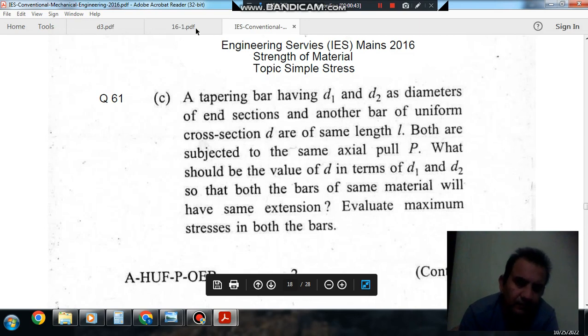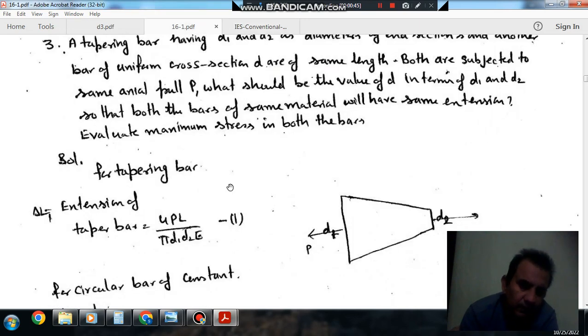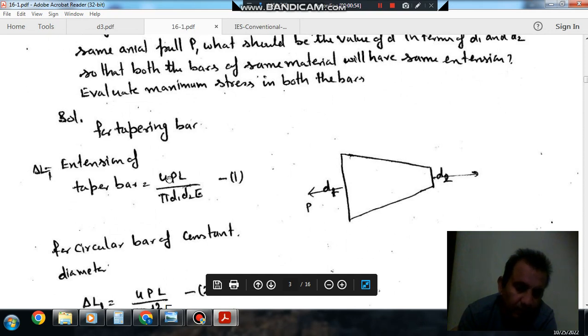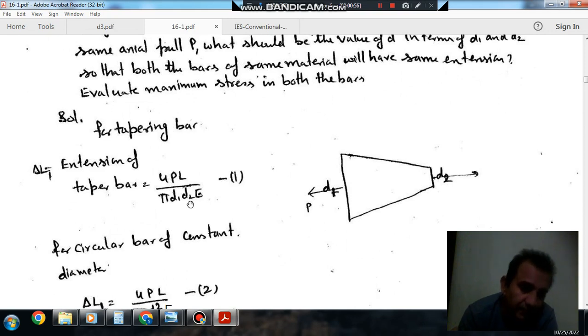So this is your taper bar. This is diameter d1, this is diameter d2, and this is your load P. Extension of taper bar, the formula is 4PL divided by π d1 d2 E.